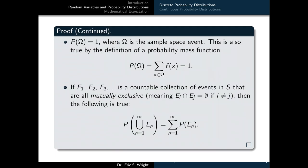Moving on, we must demonstrate that when we apply P to the sample space itself, we get a value of 1. This is true by the definition of the probability mass function, because P(omega) is just the sum of f(x) over all possible values in the sample space, and by definition of any PMF, that sum must equal 1. So that property is automatically satisfied.